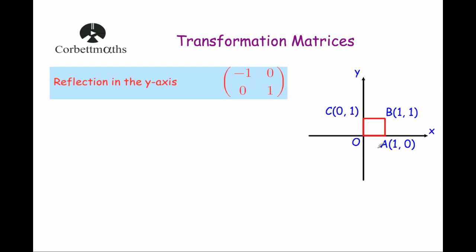So here we've got the unit square. If we were to multiply the points O, A, B and C by this transformation matrix, it will reflect the unit square in the y-axis, so it will bring it over here. So let's have a look and see if that happens.